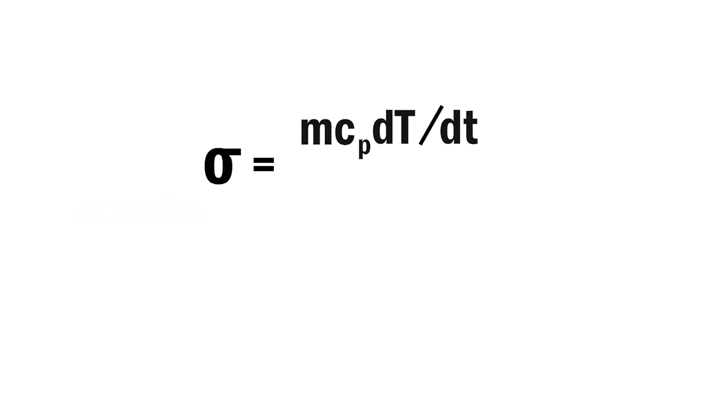Comparing the last two equations, we get an expression for Stefan's constant as sigma equals M C_P dT by dt, the whole divided by A into T_H raised to 4 minus T_D raised to 4.